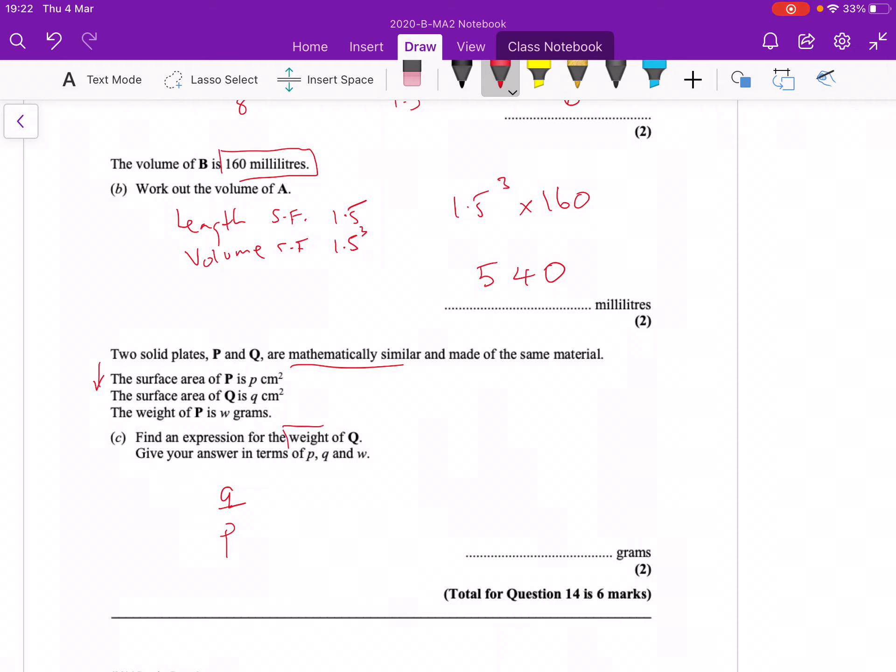If we're going to be working out what the weights are, then we need the volume scale factor because the weight is dependent on the volume. So if I've got an area scale factor, firstly it's going to need square rooting to find the length scale factor, and then it is going to need cubing to find the weight or the volume scale factor.